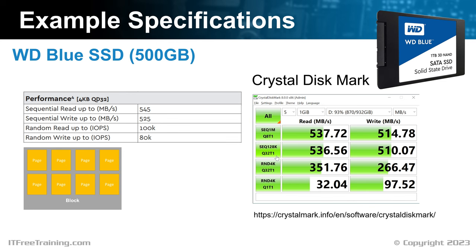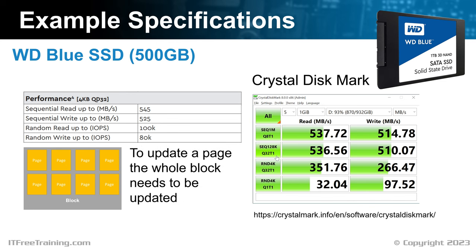You can see a block on the solid state drive. In this example, the block contains 8 pages. A page is the smallest unit on the solid state drive, but in order to update a single page, the whole block needs to be updated. This means the whole block needs to be read into memory, updated, and then written back. When you are doing sequential reading or writing, this process is very efficient. Consider you have a completely empty block, and since the data is sequential, the whole block could be written at once. The same goes for sequential reading — if the data is all contained in the same block, the whole block can be read at once and all the data is used, with none of the data that is read needing to be discarded.